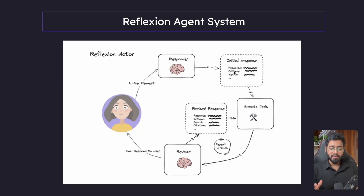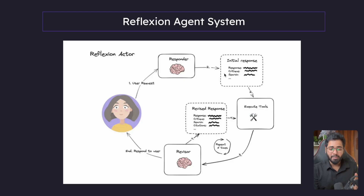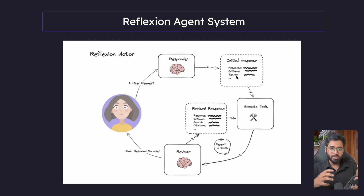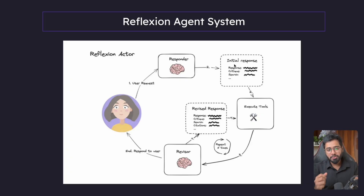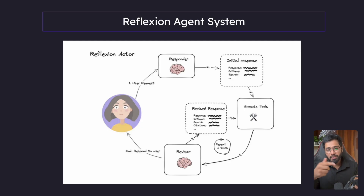So far in the state, you can imagine that we have the initial human message. The second item in the list is going to be the AI message that has the response, critique, and search terms — three different search terms. So the execute tools method has to take out the last message, which is the AI message, look at the search terms present, loop through each of those, and with each iteration call the Tavily search, get the response, compile it all together, and formulate a final tool message.